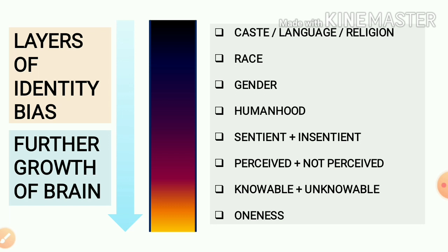The next level of identity bias is in between perceived and non-perceived. When we talk of perception, we are concentrating on sense perceptions. We human beings have five senses — through eyes we see, through nose we smell, with skin we touch, through tongue we taste, and through ears we hear. Through the sense perceptions, whatever information we gather, all the information can fall into two broadest categories: that which can be perceived through senses, and something which cannot be perceived through senses.